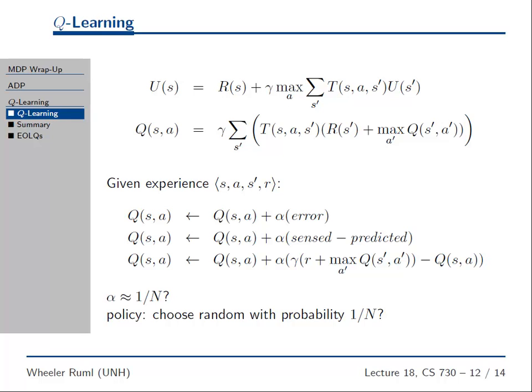Again, we have not taken exploration into account here at all. We're assuming you'll still go with the greedy action. So you should somehow ameliorate that either by trying every action in every state a certain number of times or choosing a random action with some probability. Choosing a random action with a probability that decreases over time is also not a bad thing to do.